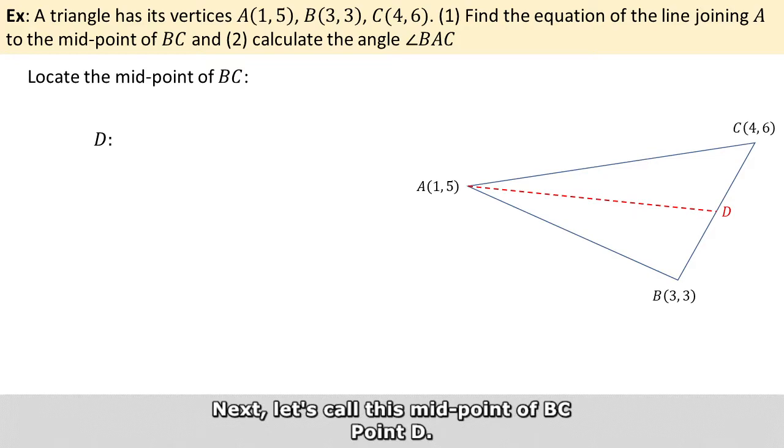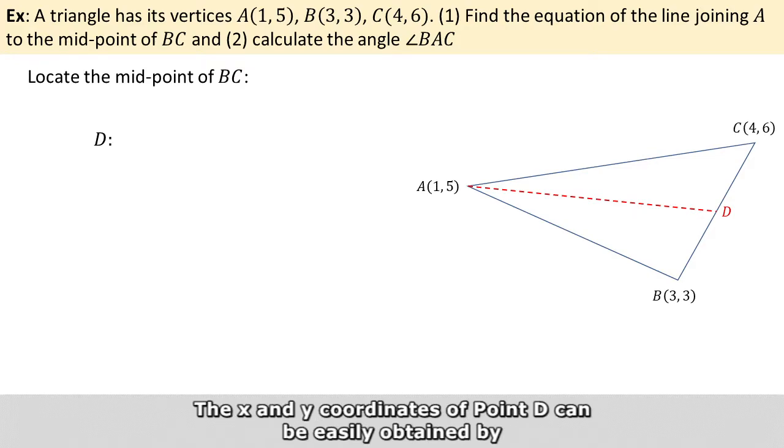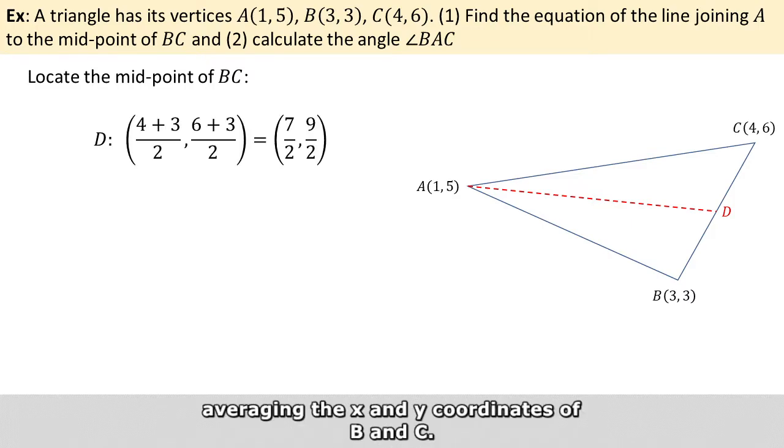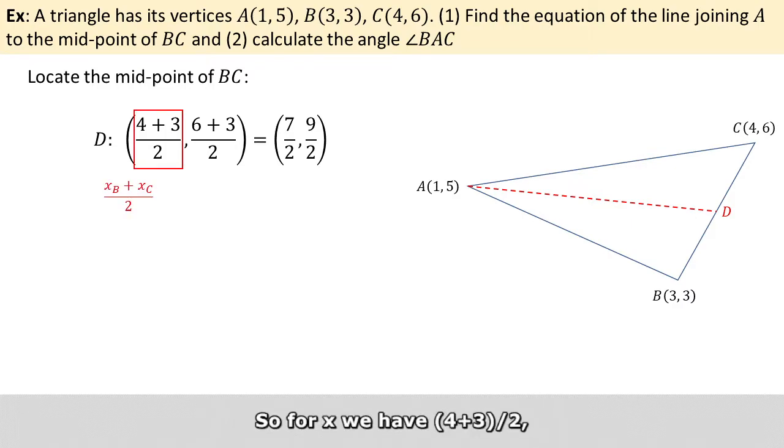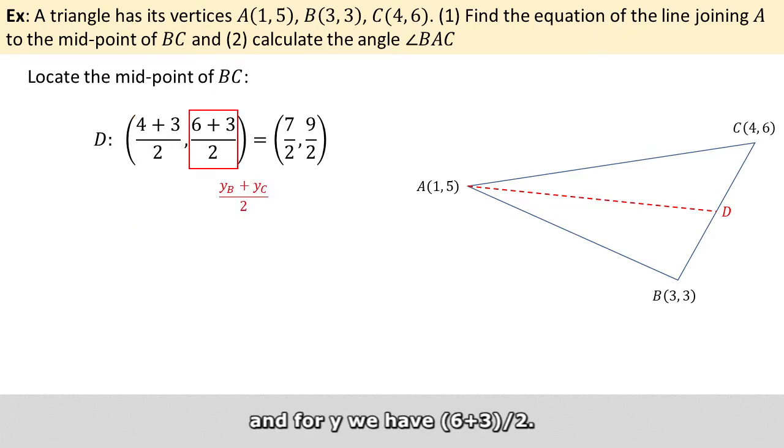Next, let's call this midpoint of BC, point D. The x and y coordinates of D can be easily obtained by averaging the x and y coordinates of B and C. So for x we have 4 plus 3 divided by 2, and for y we have 6 plus 3 divided by 2.